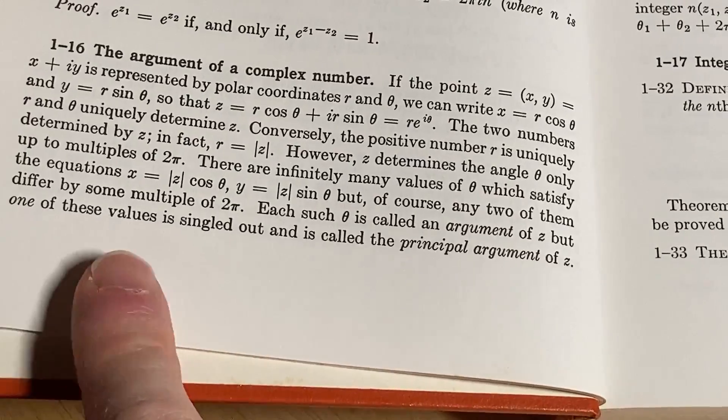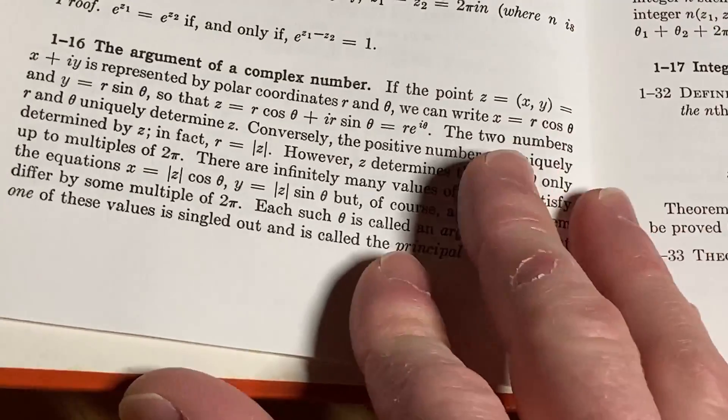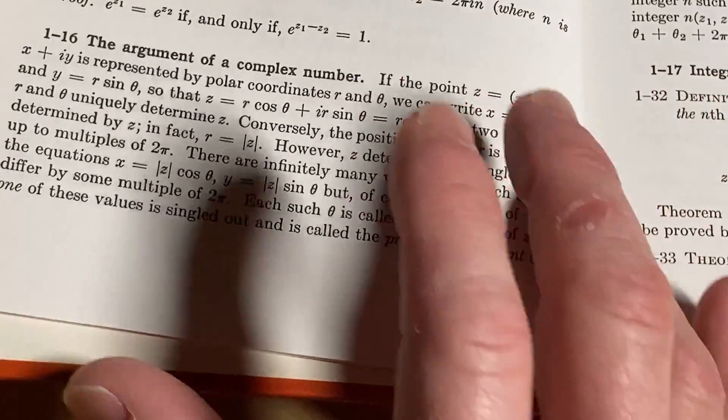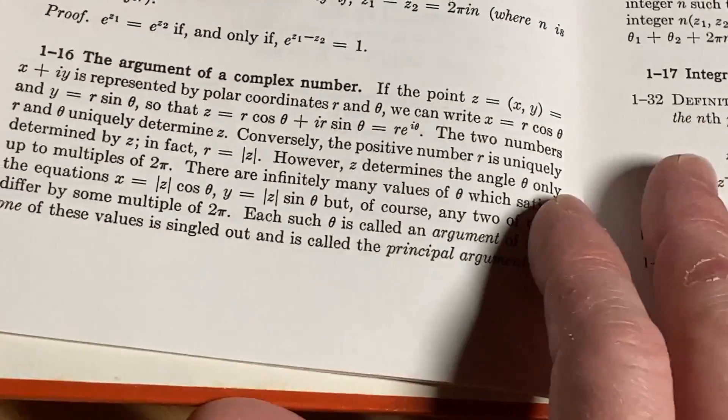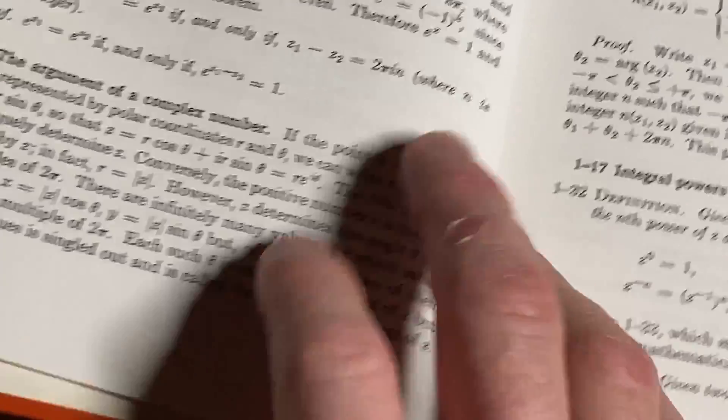But it says here, z determines the angle theta only up to multiples of 2 pi. There are infinitely many values of theta which satisfy these equations. Of course, any two of them differ by some multiple of 2 pi. Each such theta is called an argument of z. It's really important. But one of these values is singled out and is called the principal argument of z. So we just read that together. That, to me, that was crystal clear. And I think that is a testament to this book, right? I mean, that's beautiful. Very well explained.